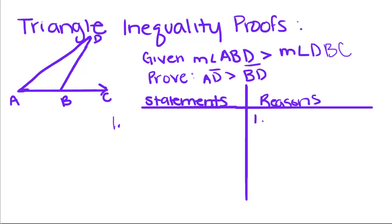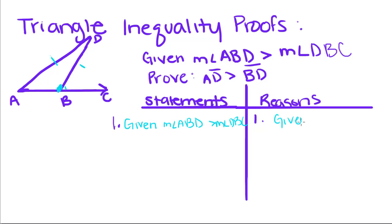Given that the measure of angle ABD is greater than the measure of angle DBC — so this angle is greater than this one — we need to prove that AD is greater than BD. We'll start by writing down our given information.